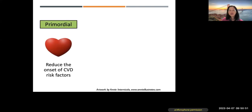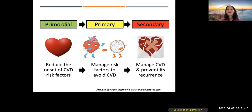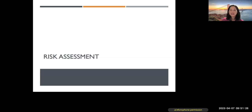Shifting now from risk factors to prevention and how we think about it. Primordial prevention is reducing the onset of cardiovascular risk factors. Primary prevention is — when people have risk factors — preventing them from having a heart attack or stroke. Secondary prevention is — after someone has had a heart attack or stroke — preventing another one.